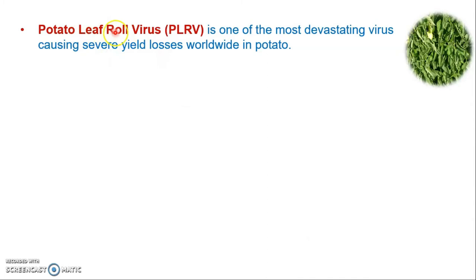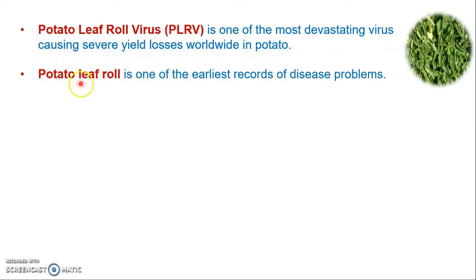Potato Leaf Roll Virus causes rolling of the potato leaves — the leaves become curved upward. Rolling and curling are two characteristic symptoms caused by this virus, which is why it is named Potato Leaf Roll Virus. It is one of the most devastating viruses causing severe losses worldwide in potatoes.